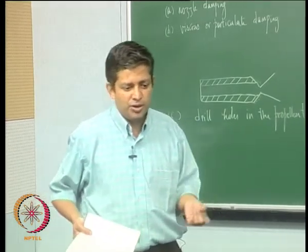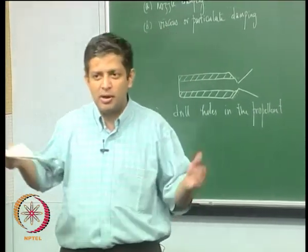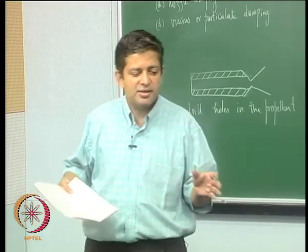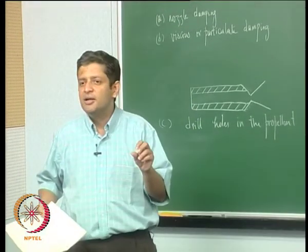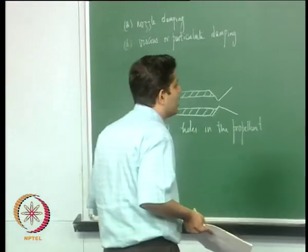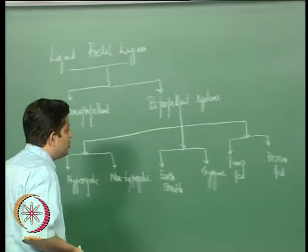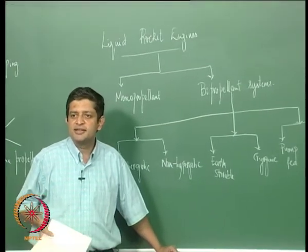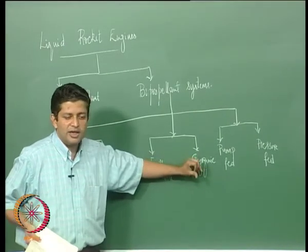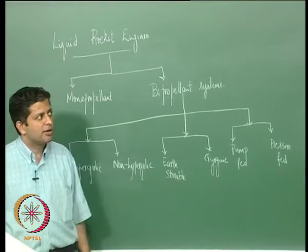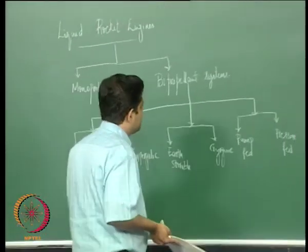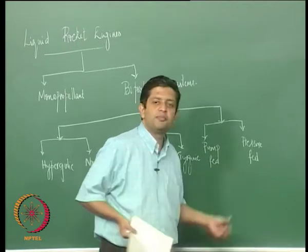You could pressurize gases to increase their density, but when you pressurize them the thickness of the pressure vessel keeps increasing with pressure, so it does not become useful after some point to store them as high-pressure gases. Therefore it is seen that going to liquids is a lot better. Cryogenic liquids are typically liquid oxygen and liquid hydrogen systems.